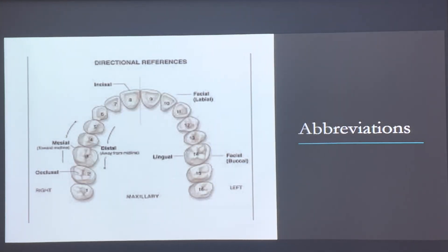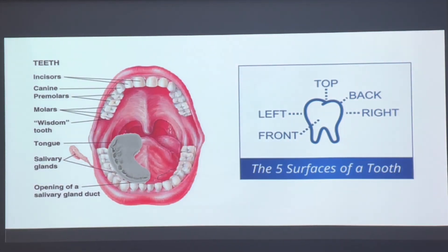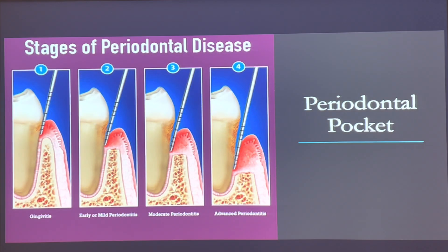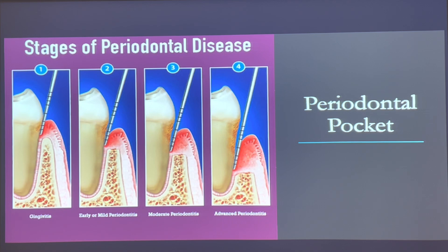We have abbreviations for the different names of the teeth: your incisors, canine, premolars, and molars. The third molar is also called your wisdom tooth — these are important landmarks in the mouth that you need to learn. We also have periodontal pocket stages of periodontal disease. They use a perio probe with lines on it to measure the depth of the sulcus. The deeper it goes, the further away the gingival tissue is. Number four is advanced periodontitis — the tissue has moved away so much that the tooth is not supported, so that tooth will be very loose.